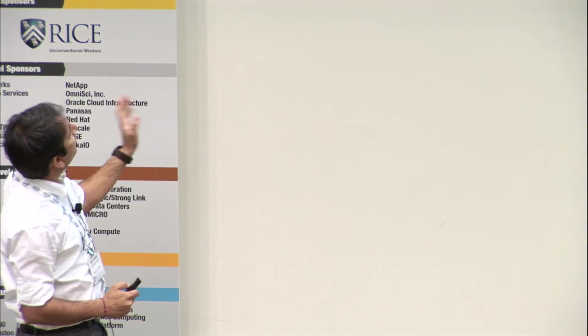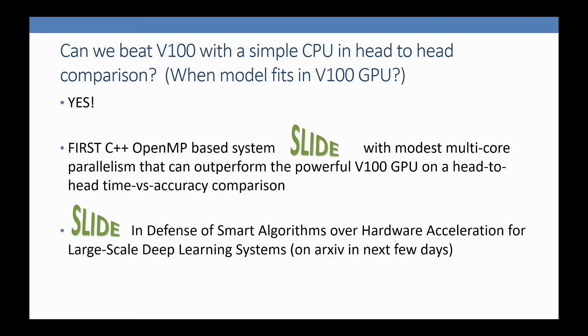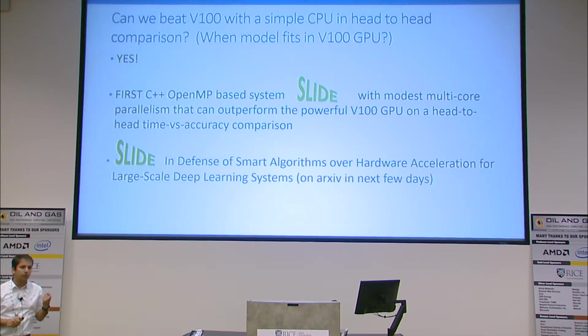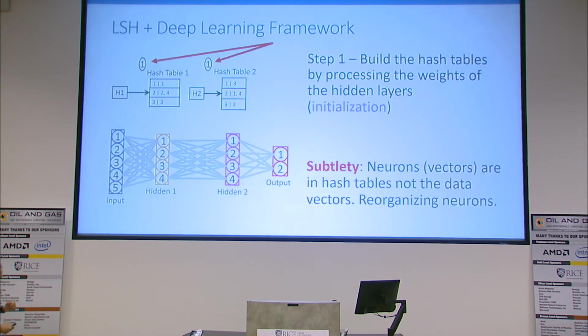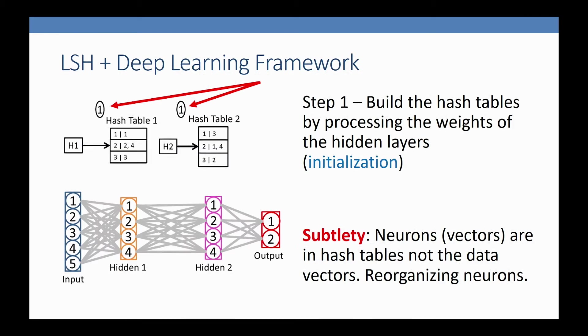Here's something we've recently worked on that we'll release on arXiv very soon. We were obsessed with this: can we have a good algorithm that can beat V100 with a simple CPU? You give me a neural network that fits on your V100 and train it on TensorFlow. I have a simple CPU—can I beat that setting with a different algorithm? The answer is yes. I won't go into much detail, but the crux is I'm going to exploit sparsity.